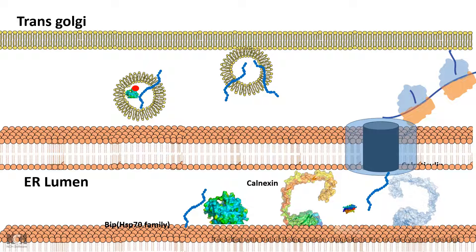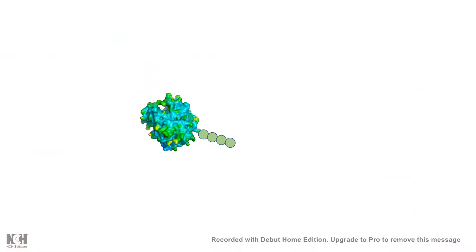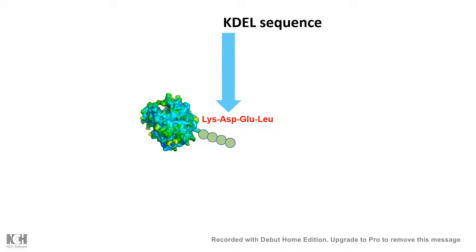During packaging, one particular ER resident protein — marked here in blue — can be mistakenly transported into the trans-Golgi network. ER resident proteins have one unique tag consisting of lysine, aspartate, glutamate, and leucine, known as the KDEL sequence. This KDEL sequence is necessary and sufficient to retain ER resident proteins inside the ER.